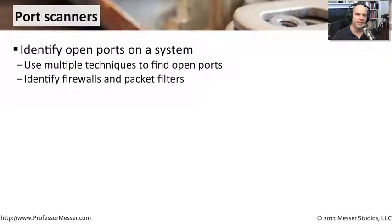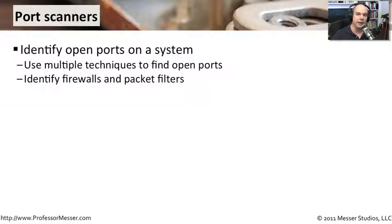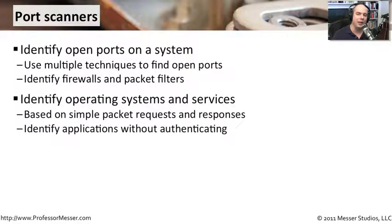Another proactive method of finding risk on your network is to use port scanners — software that accesses other systems on your network and queries them to determine what ports might be open. Once we know those open ports, we get a better understanding of what the bad guys might see if they also accessed these computers. This is also a way to identify when a firewall or packet filter might be in place, because sometimes not getting a response from a system is just as valuable as getting a response. Most port scanners can also query systems to determine what operating system is running or what services might be behind those open ports.